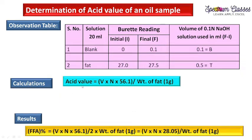Students often get confused between the acid value formula and the free fatty acid formula. For acid value, the formula uses: volume of KOH consumed against fat × normality × molecular weight of KOH (56.1). For free fatty acids, we use: volume consumed against fat × normality of KOH × 28.05. The value 28.05 comes from dividing the molecular weight of KOH (56.1) by 2, which is equivalent to Acid Value ÷ 2.